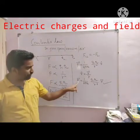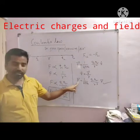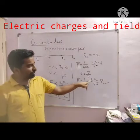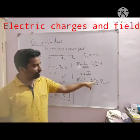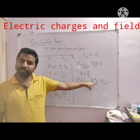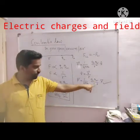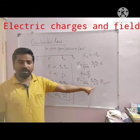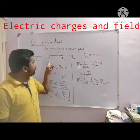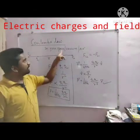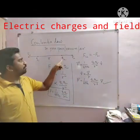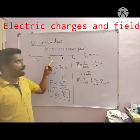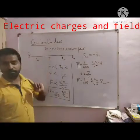In SI units, the force is in Newtons, Q1 and Q2 are in Coulombs, and the distance R is in meters. This is the force between two point charges in air or vacuum.